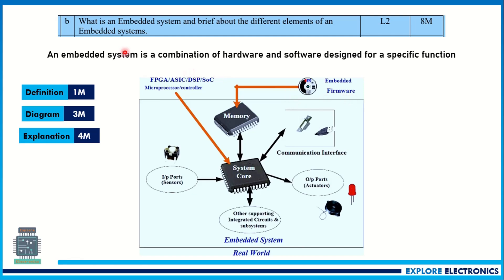The second part of the eighth question is: what is an embedded system? Brief about the different elements of an embedded system. The diagram is the same as shown in the previous question. The different elements present in the embedded system are: embedded firmware, memory, system core, output actuator, and input side sensor, and we also have supporting integrated circuits. We need to define the embedded system first. An embedded system is a device which consists of hardware as well as software — we call it firmware. Then draw the diagram and explain each component briefly.